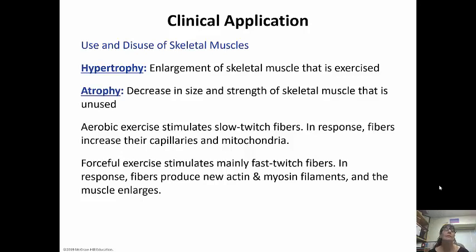If we do not use our skeletal muscles, they can atrophy, which means they decrease in size and strength. If we use them a lot, like through exercise, it causes hypertrophy, which is an enlargement of the skeletal muscle. Aerobic exercise is going to stimulate those slow twitch fibers — in response the fibers are going to increase their blood supply and mitochondria and myoglobin supply. Force exercise stimulates mainly fast twitch fibers — in response those fibers are going to produce new actin and myosin filaments, and the muscle is going to enlarge, like with lifting weights.